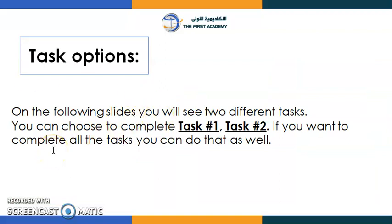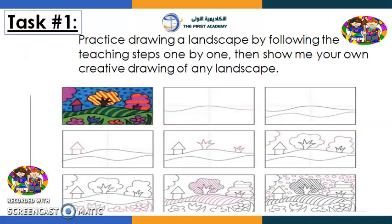Let's go to task number one and two. It's up to you — if you want to complete task one or task two, you can choose, or if you want to do both of them you can. Task number one: practice drawing a landscape by following the teaching steps one by one, then show me your own creative drawing of any landscape you choose. Remember, we talked about mountains, hills, oceans, lakes, and so on.